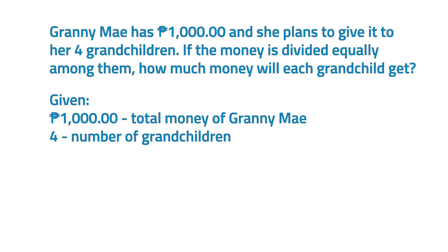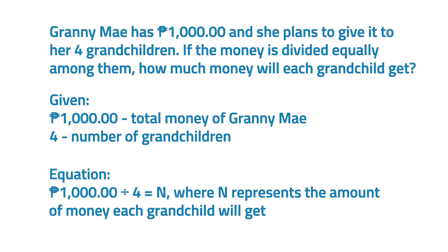For step 3, let's formulate the number sentence. To find the amount of money each grandchild will get, we must divide the total money of Granny May by the number of grandchildren. So the equation will be 1,000 pesos divided by 4 equals N, where N represents the amount of money each grandchild will get. For step 4, let's solve the number sentence using the long division method.